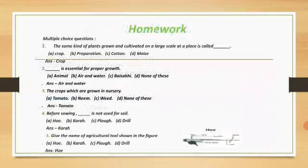Now we have your homework. First, multiple choice questions. Question 1: The same kind of plants grown and cultivated on a large scale at a place is called dash. Options: crop, preparation, cotton, maize. The correct answer is crop. Question 2: Dash is essential for proper growth. Options: animal, air and water, messakhi, none of these. The correct answer is air and water.